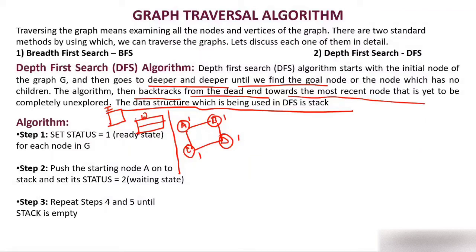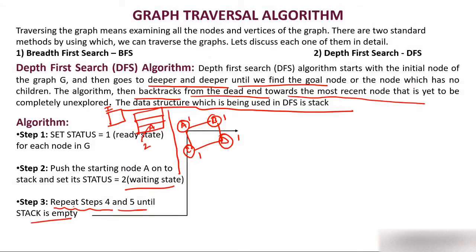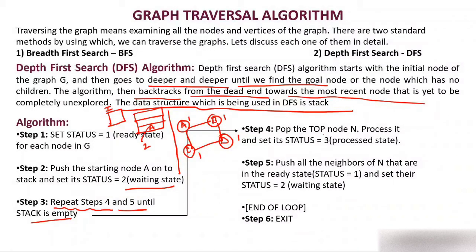Previously we took the waiting room as a queue; now the waiting room is a stack. Push the starting node A onto the stack and set its status to 2 — it is now in the waiting state. Step 3 says repeat steps 4 and 5 until the stack is empty. Step 4 says: pop the top node. The top node is A — pop it, remove it from the stack, process it, and set its status to 3. This is like sending that node to the interview room.